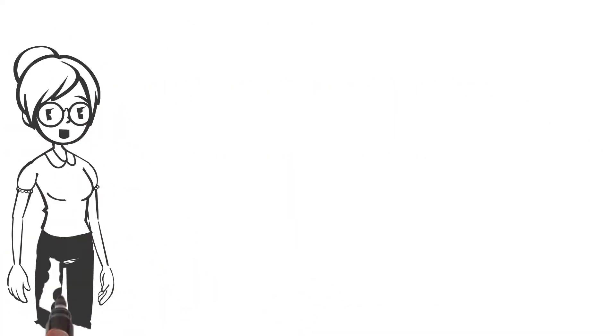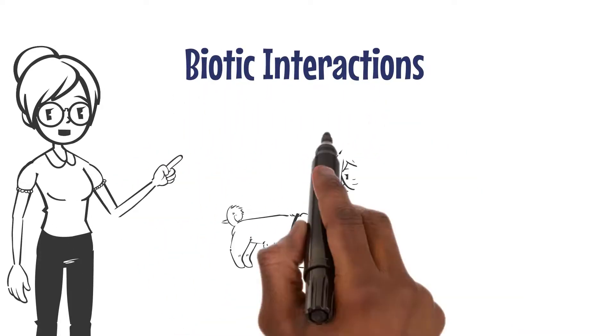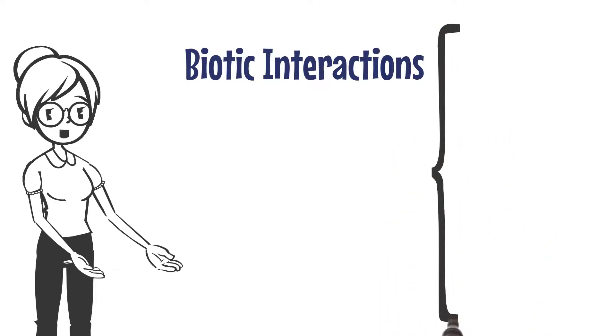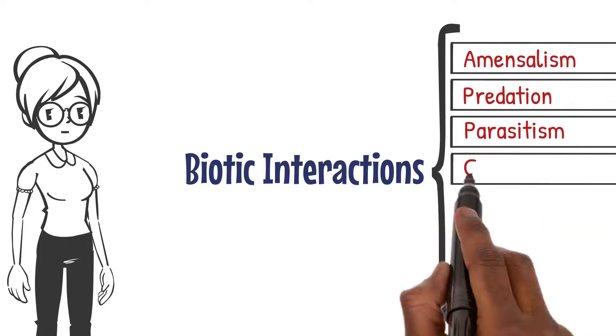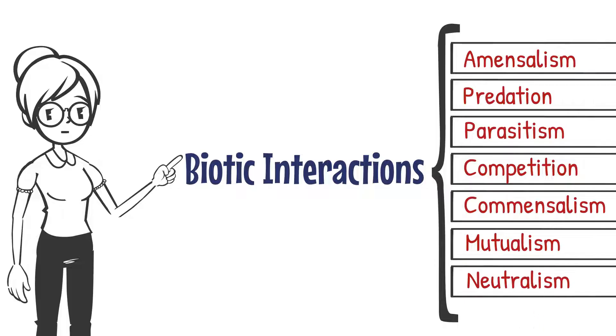Now let's explore the fascinating world of biotic interactions—how living organisms interact with each other within an ecosystem. There are seven types of interactions: amensalism, predation, parasitism, competition, commensalism, mutualism, and neutralism. Let's take a closer look at each of these interactions and the amazing examples they offer.